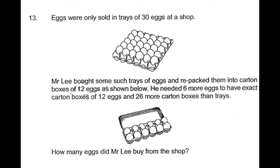Eggs were only sold in trays of 30 eggs at the shop. Mr. Lee bought some such trays of eggs and repacked them into carton boxes of 12 eggs as shown below. He needed 6 more eggs to have exact carton boxes of 12 eggs and 26 more carton boxes than trays. How many eggs did Mr. Lee buy from the shop?